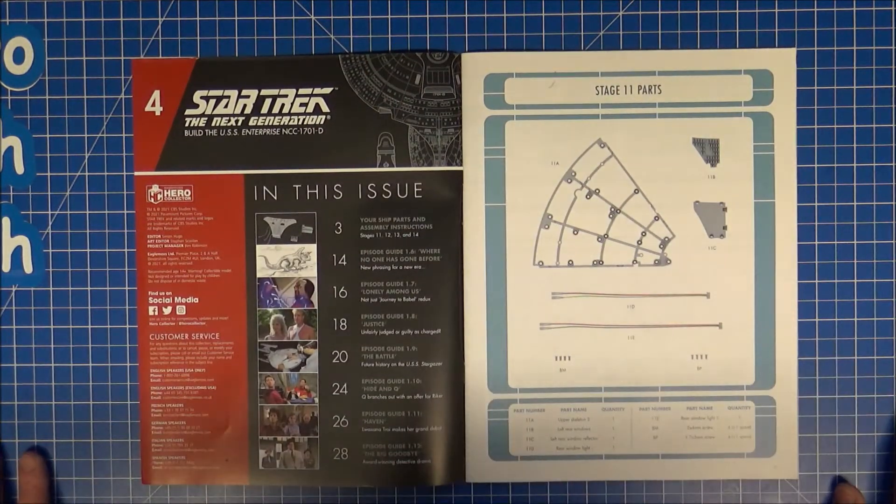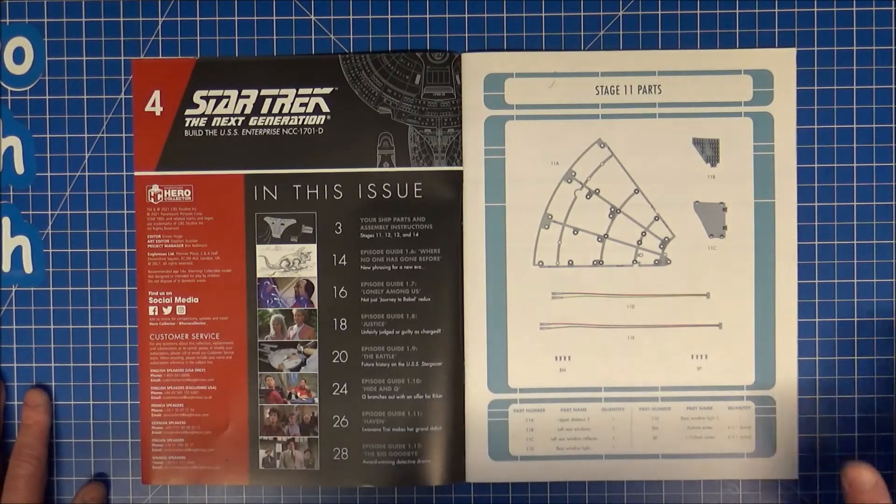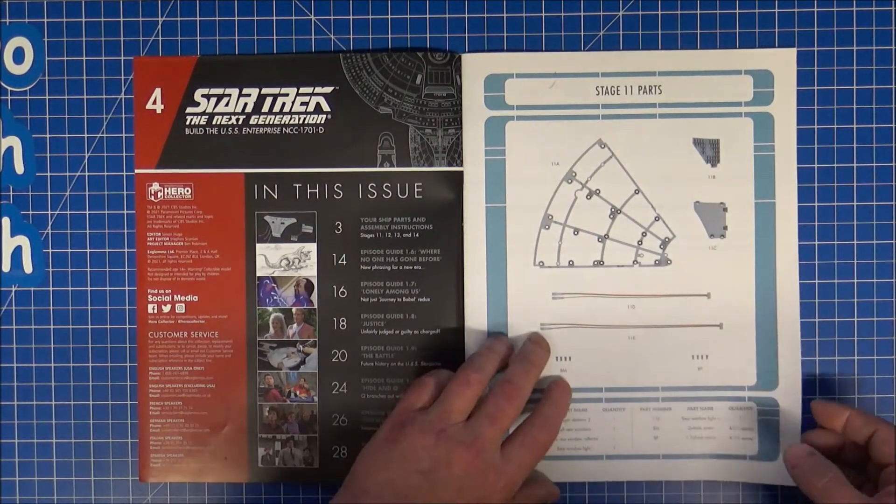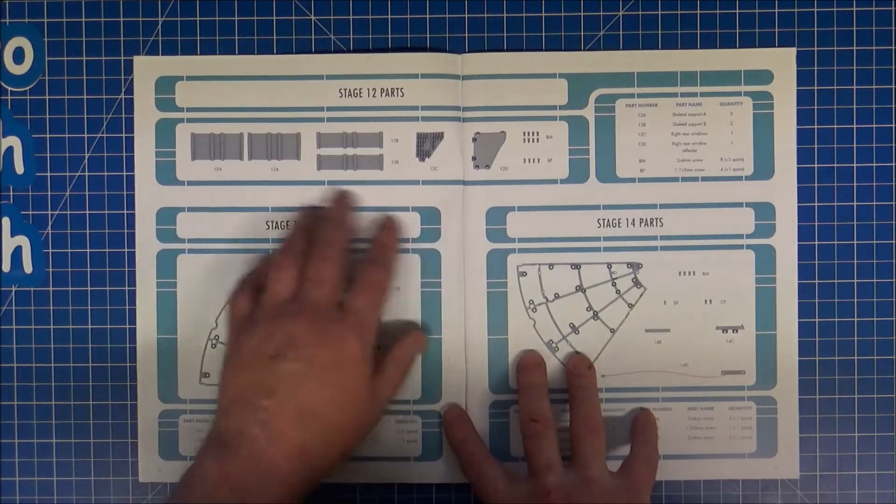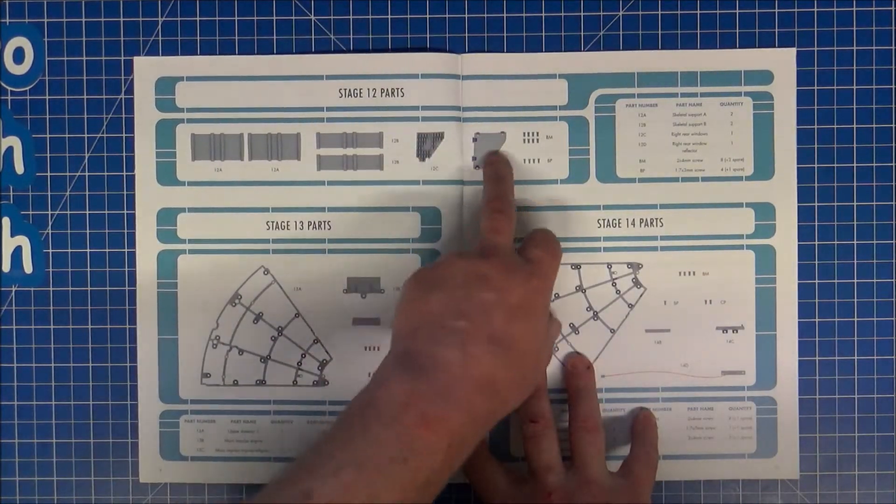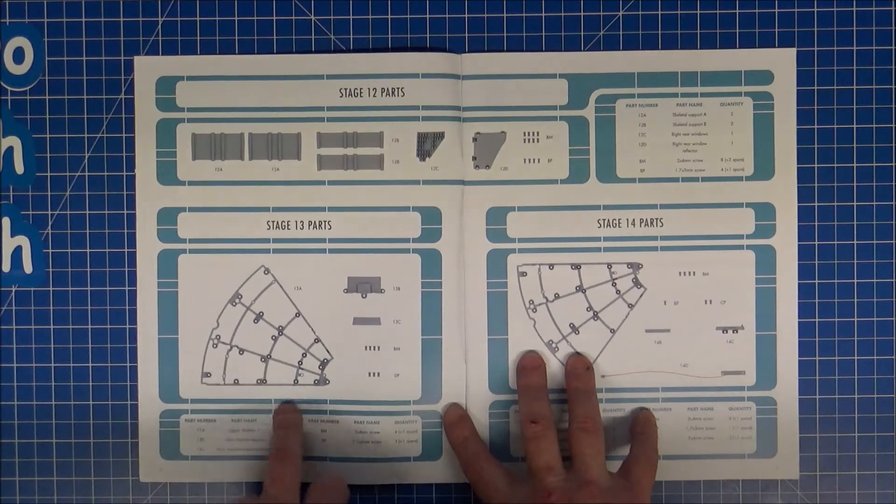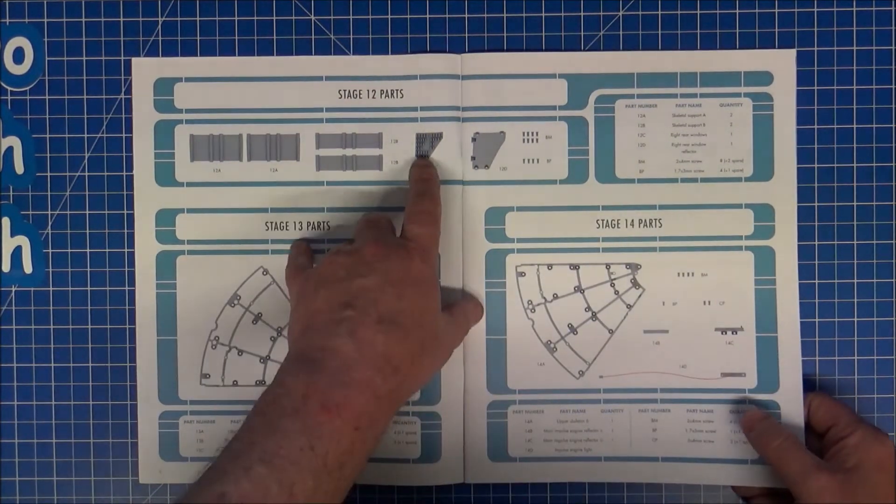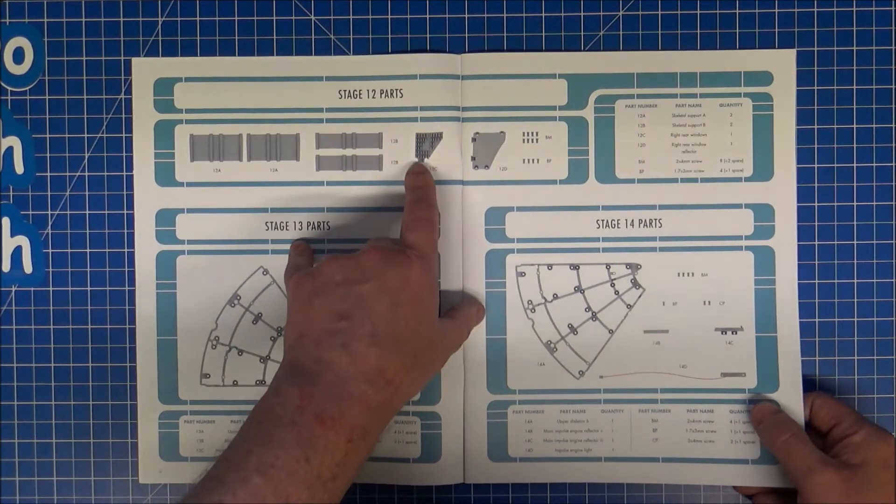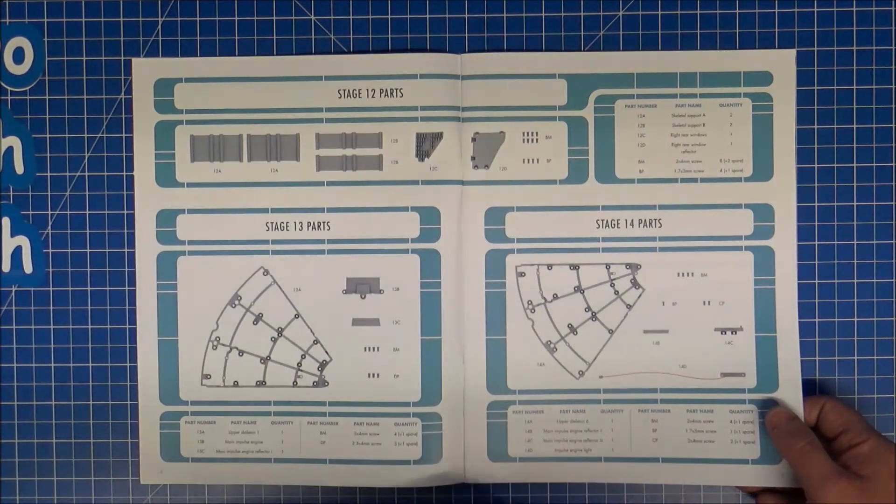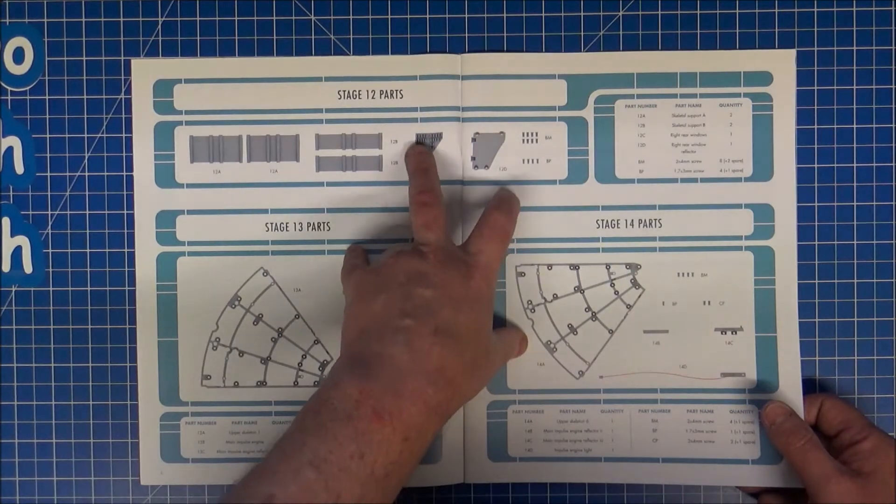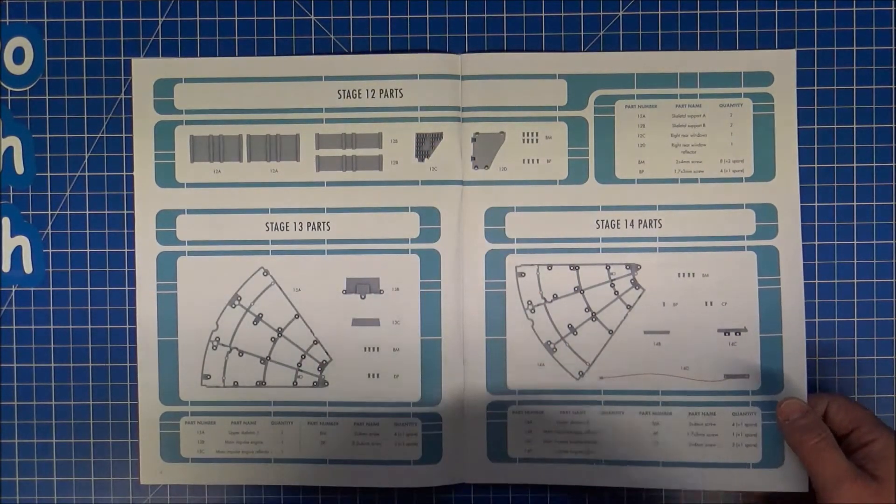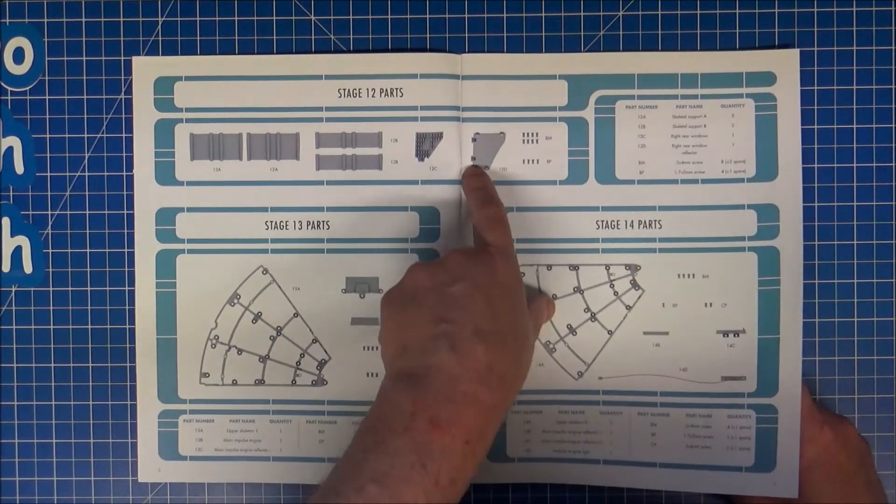Well, we'll get around to that one eventually, unless I give up with this completely. No, we shouldn't anyway. So we've got parts for part 11, structure and lights and screws, 12 supports, more structure. So we're still building on the saucer then.